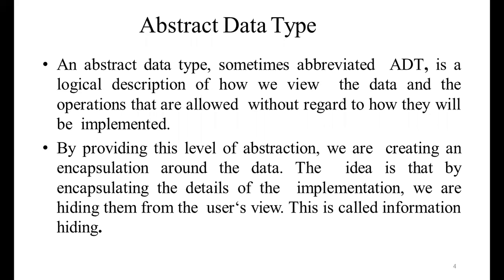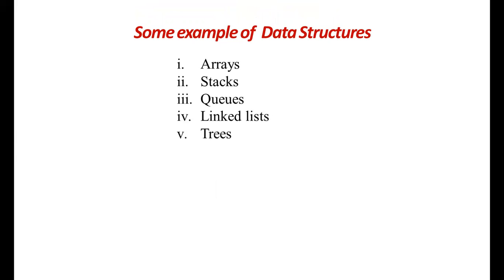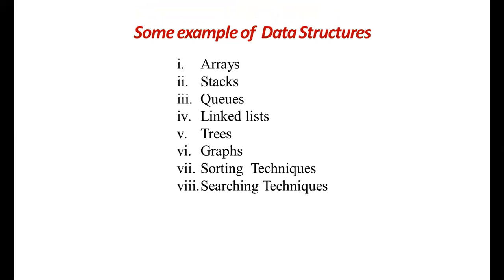Some more examples of data structures are stacks, queues, linked lists, trees, and graphs. All these come under algorithms. We also see sorting techniques and searching techniques, and all these come under the algorithms. Now we will see them one by one. Algorithms — or rather, data structures — are divided into two types.